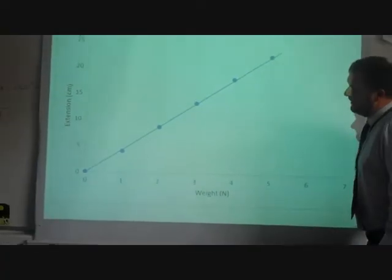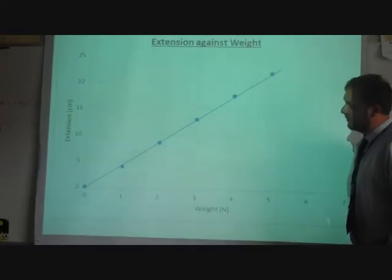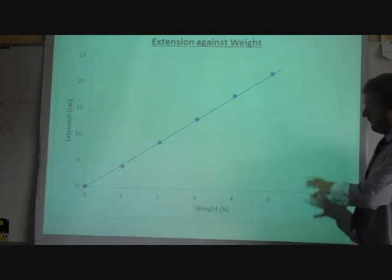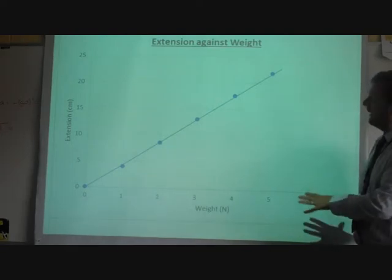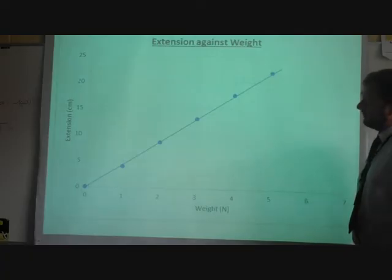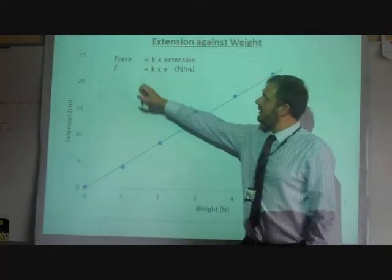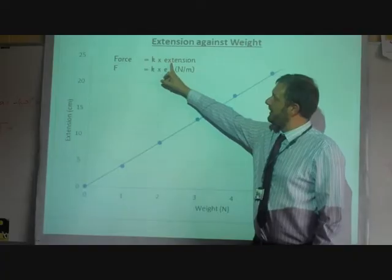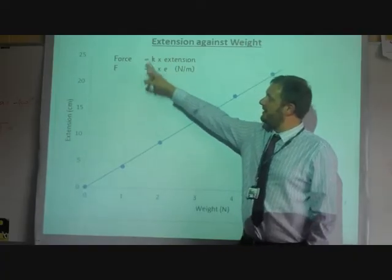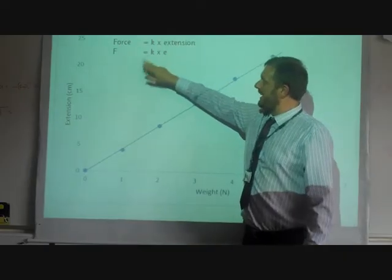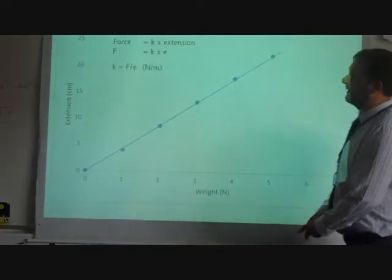This is a straight line, because we know that for a spring that obeys Hooke's Law, that the extension is proportional to the weight added. And really what we've got to do from this graph is use it to come up with a value for the spring constant. Now this is what you've got from your lesson. You know that the force applied is proportional to the extension, so we say that the force is equal to K times the extension, F equals Ke, where K is the spring constant.